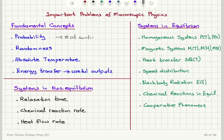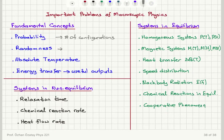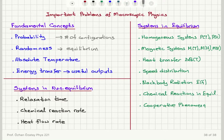A macrostate corresponds to a certain number of configurations — the more configurations, the higher the likelihood of obtaining that macrostate. This implies that at equilibrium we have the most random situation. The distribution of energy at equilibrium gives us the most random distribution of energy, which is related to absolute temperature — specifically to average kinetic energy per molecule.